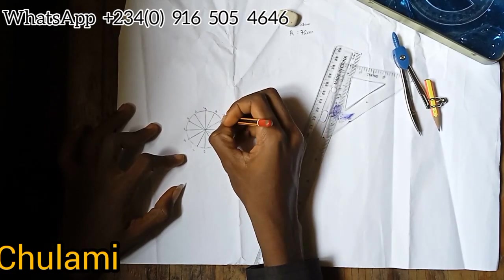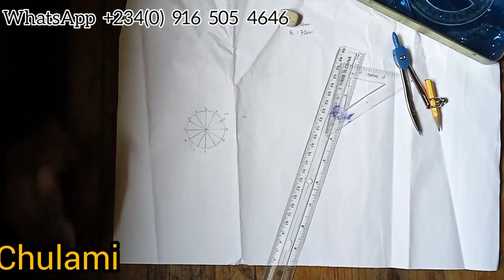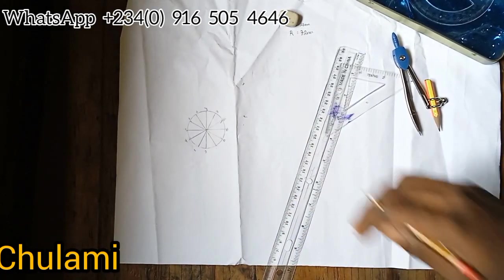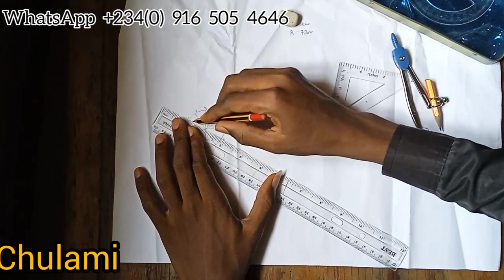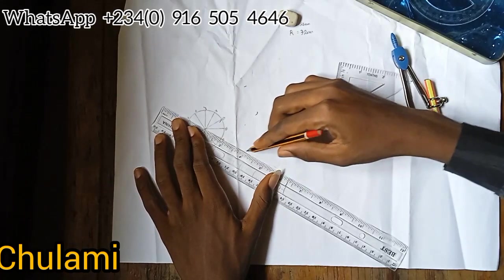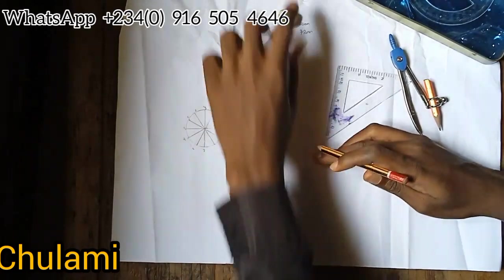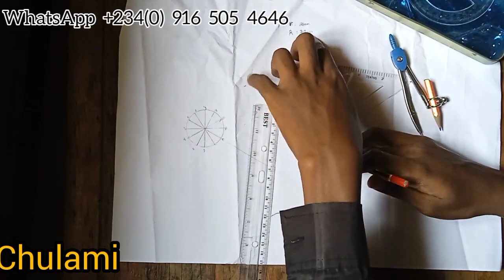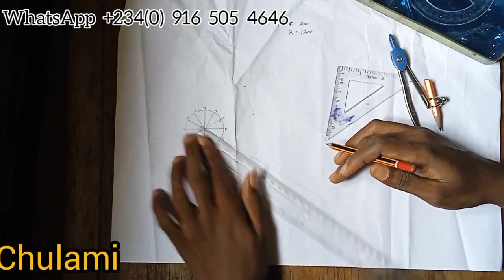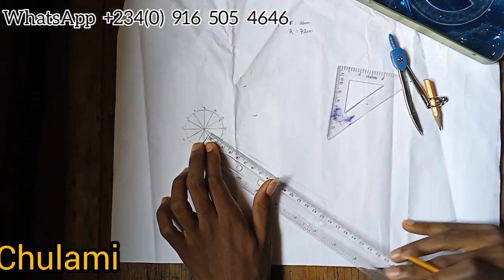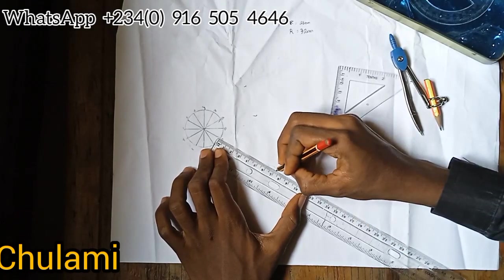From point zero I'll elongate a line. Now this line, remember the radius of our directing circle is 72, so from this zero I'll measure 72, that's 7.2 in centimeters.